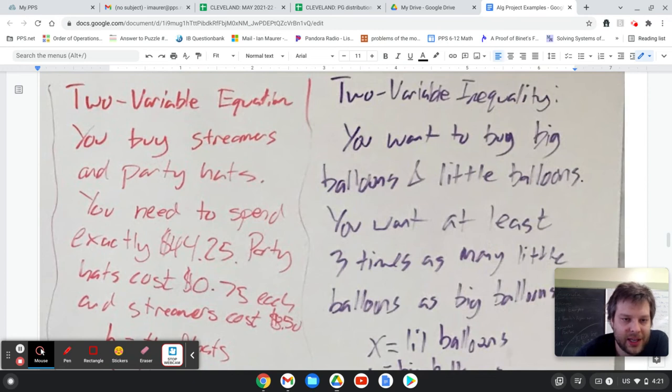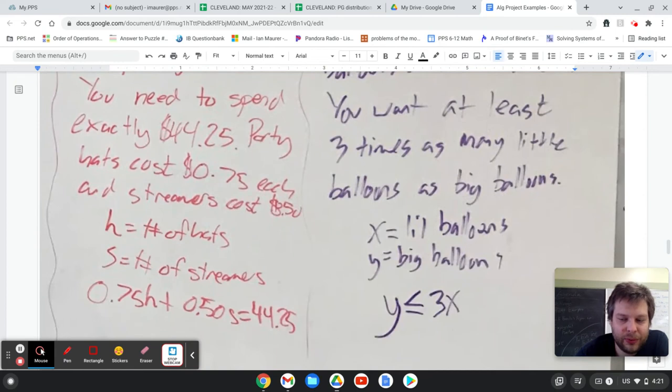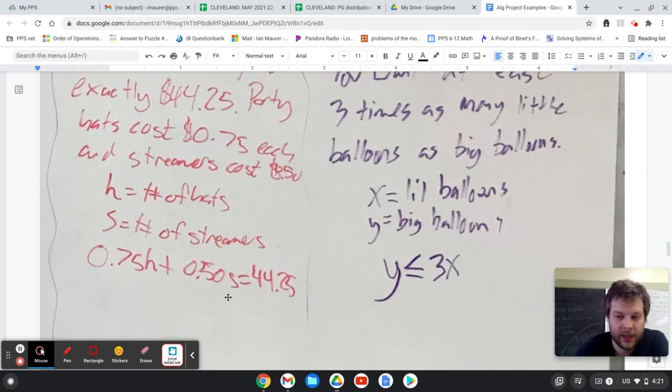So two variable equation - I came up with streamers and party hats, and you need to spend exactly $44.25. Party hats $0.75, streamers $0.50. You can come up with a standard form equation: $0.75 per hat plus $0.50 per streamer equals $44.25.